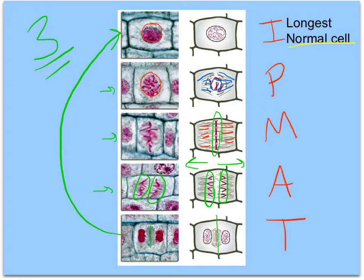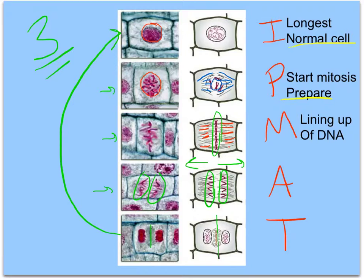Prophase is the beginning of mitosis. Here mitosis gets started and the cell begins to prepare to divide. So things like the nuclear envelope coming apart happen at this space. Next we have metaphase. In metaphase we have the lining up of the DNA of the chromosomes along the center. We can see that line in both the photograph and the diagram.